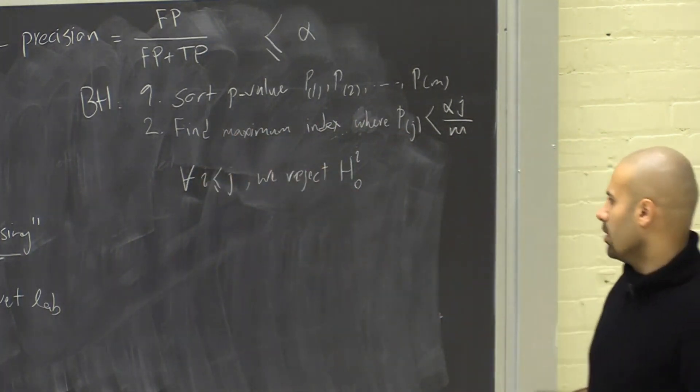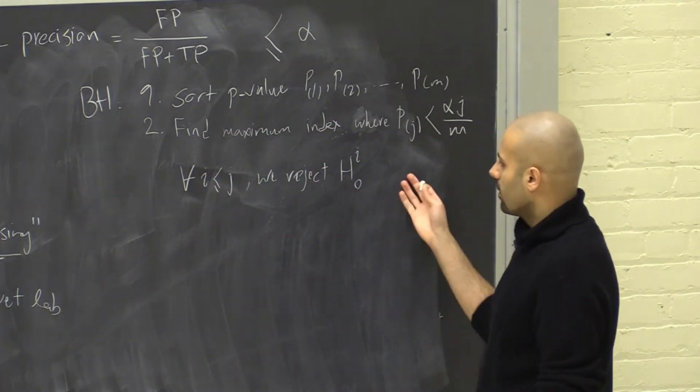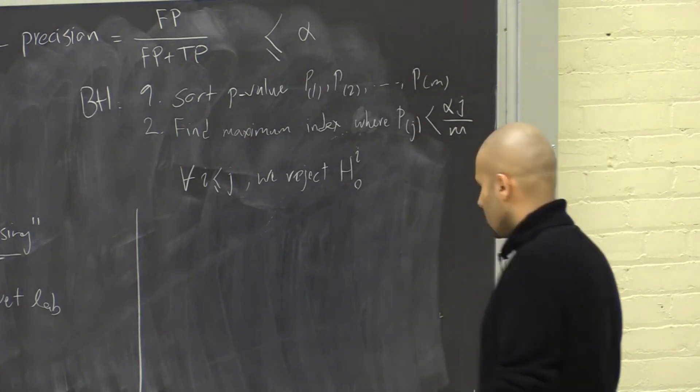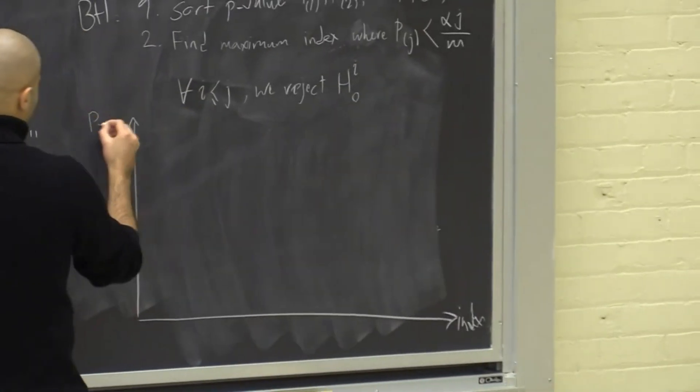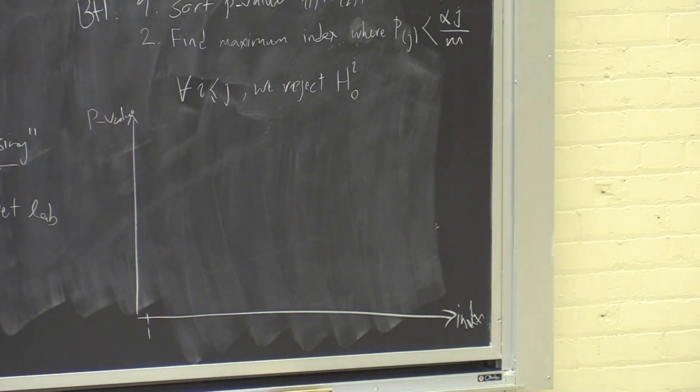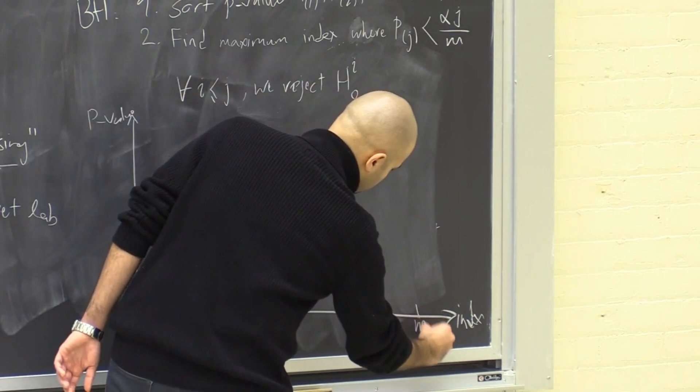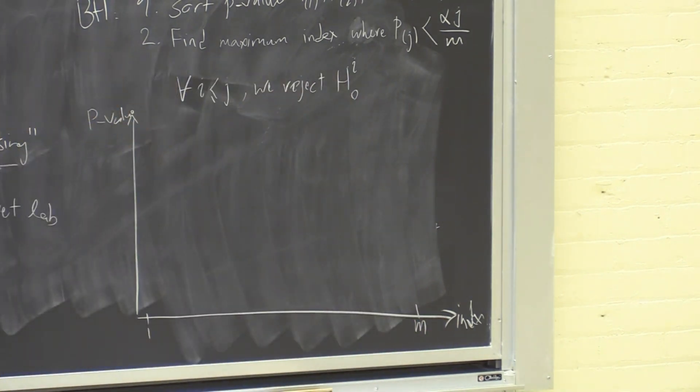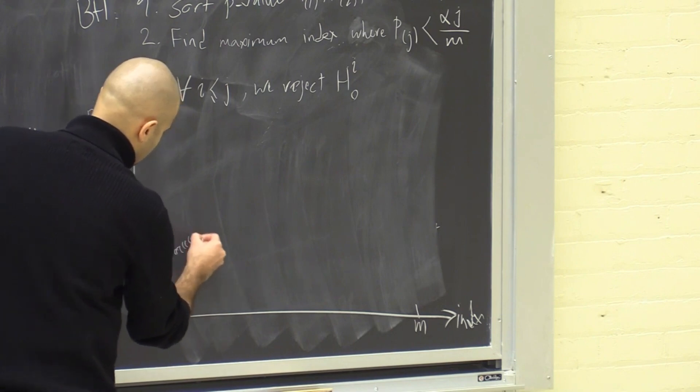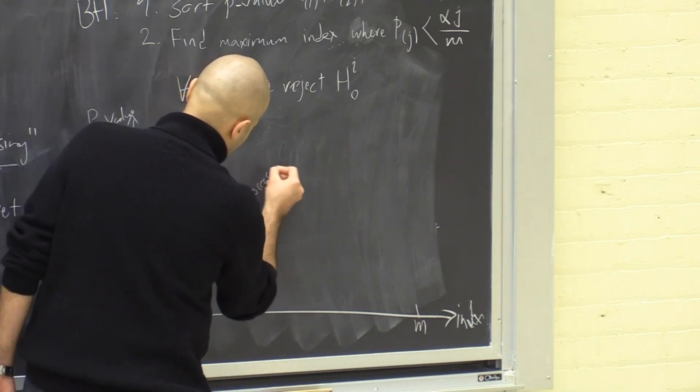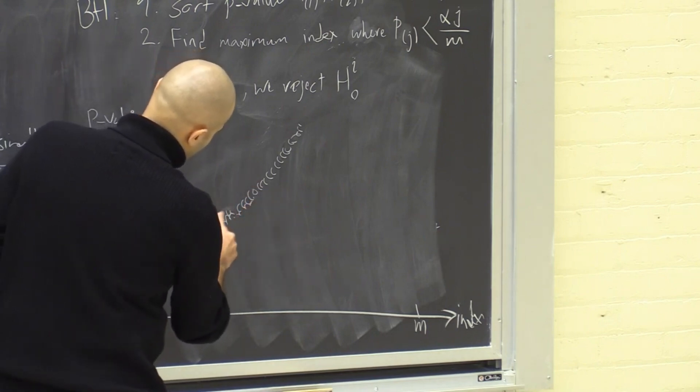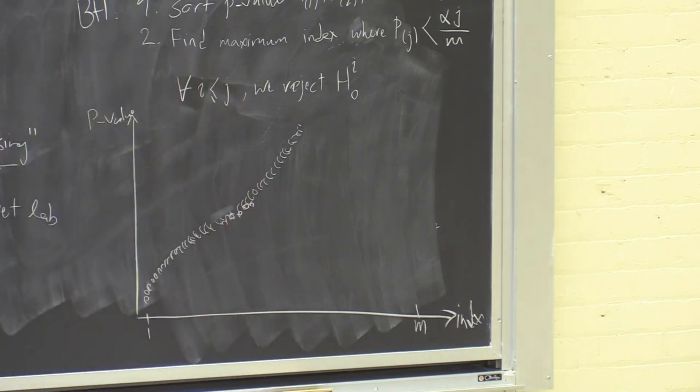And this method guarantees that false discovery rate is less than alpha. So the proof is more involved than the previous proof we had like for Bonferroni. But this is the method that we need to follow. So to give you an example of how this works, let's say the x-axis represents index, and the y-axis represents these sorted p-values. So if the p-values, let's say we have M tests, so here we have M. There are M p-values. These p-values could be something like this.